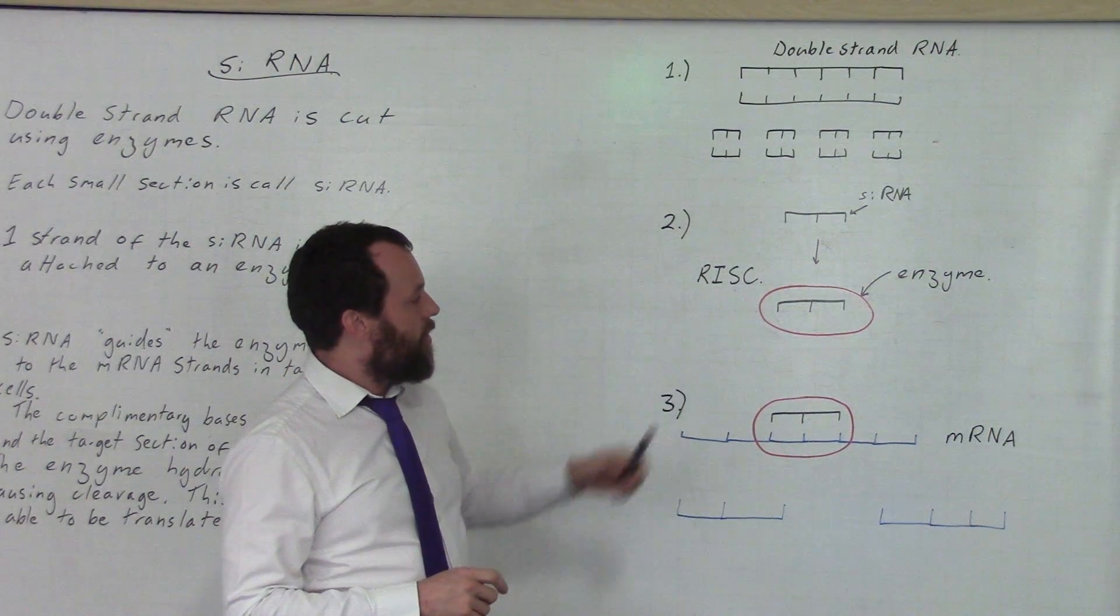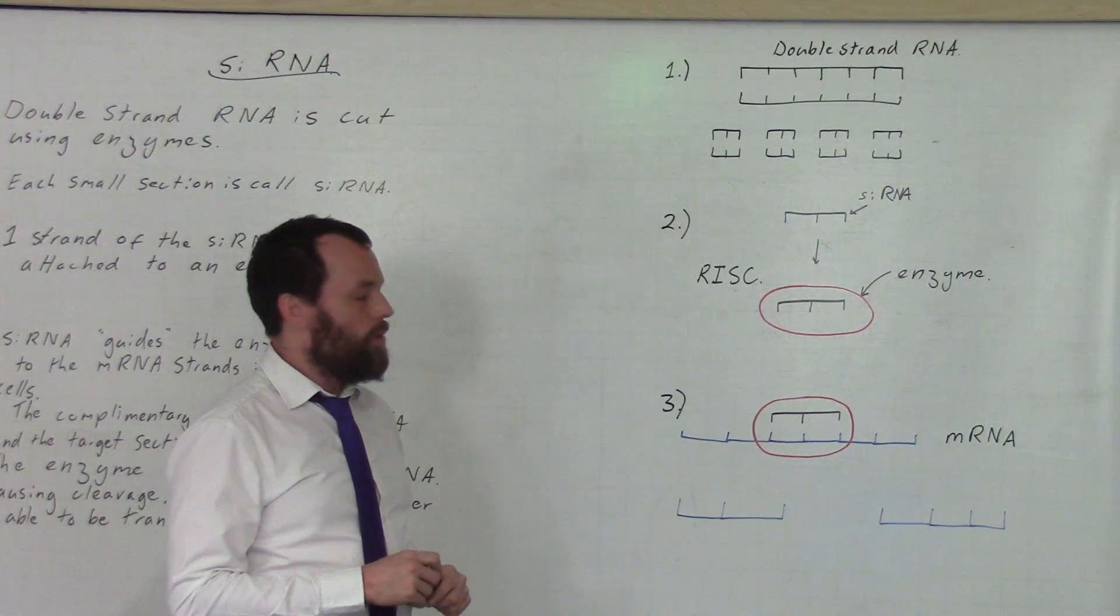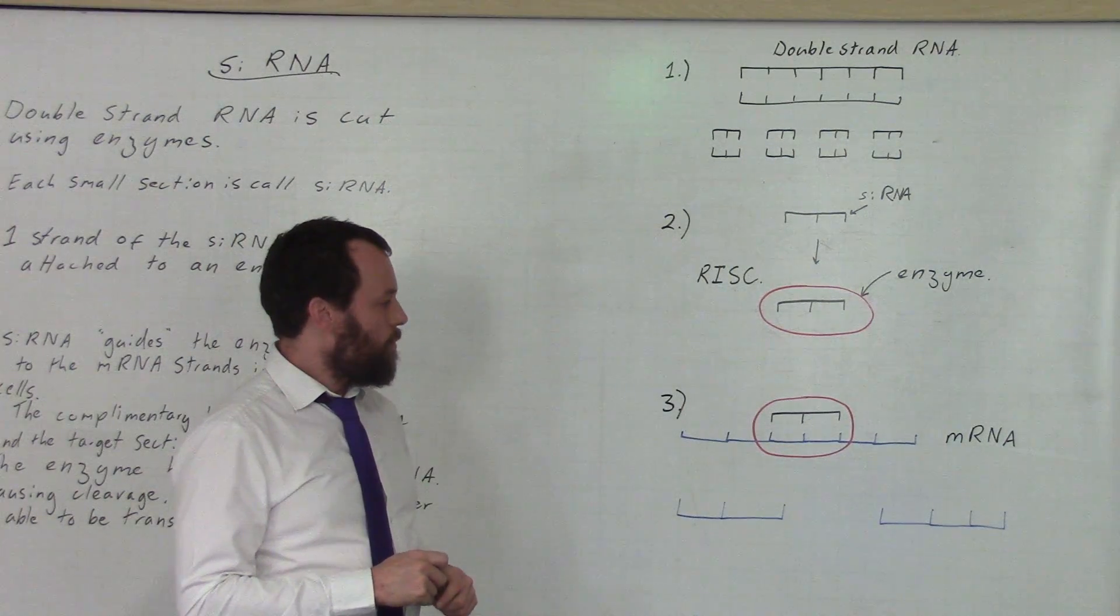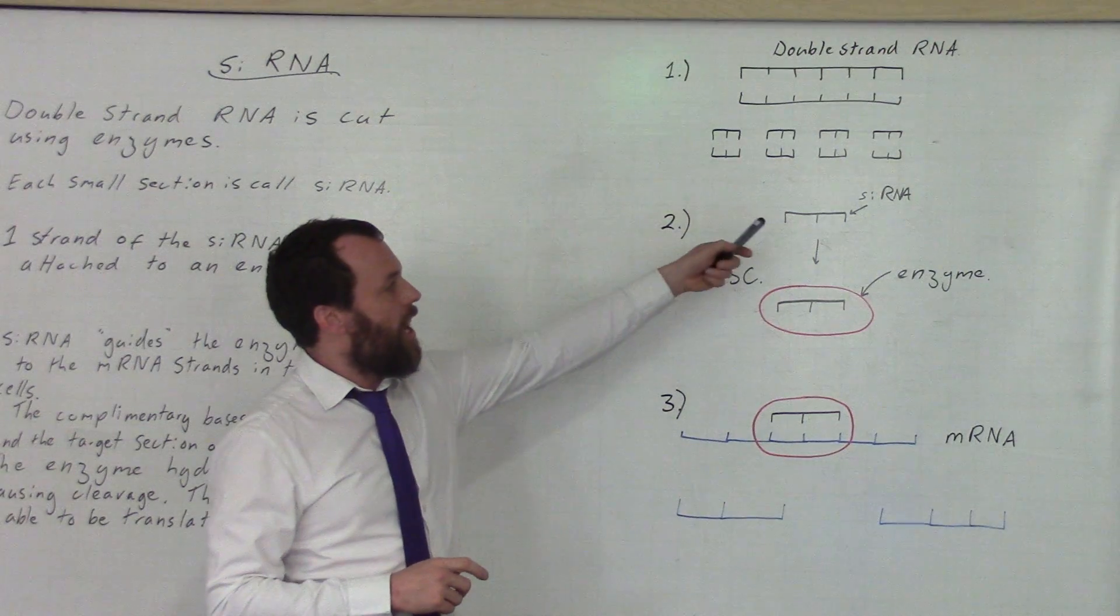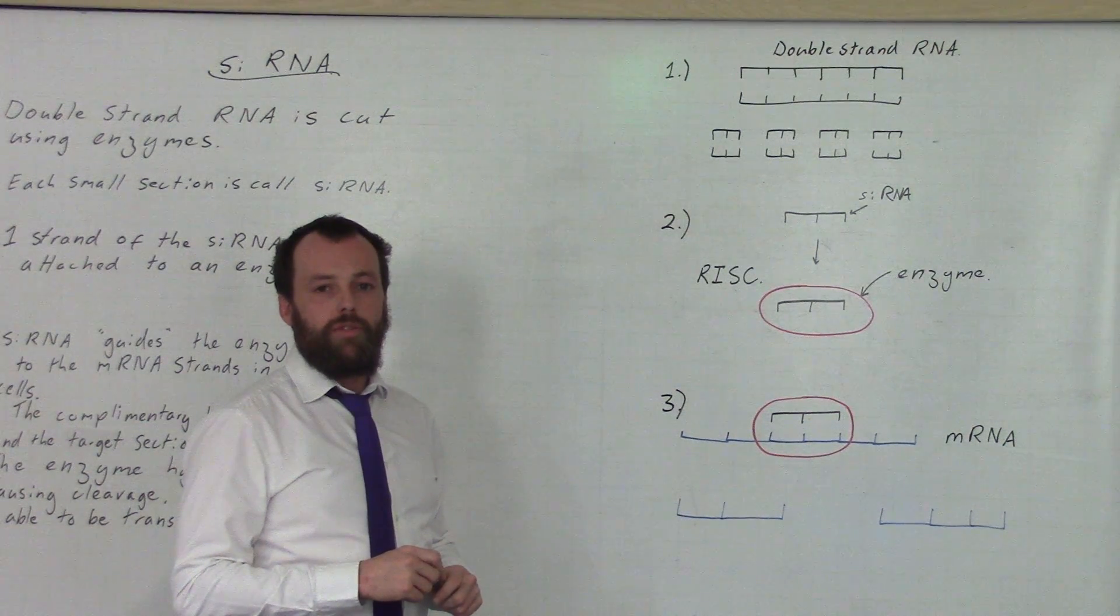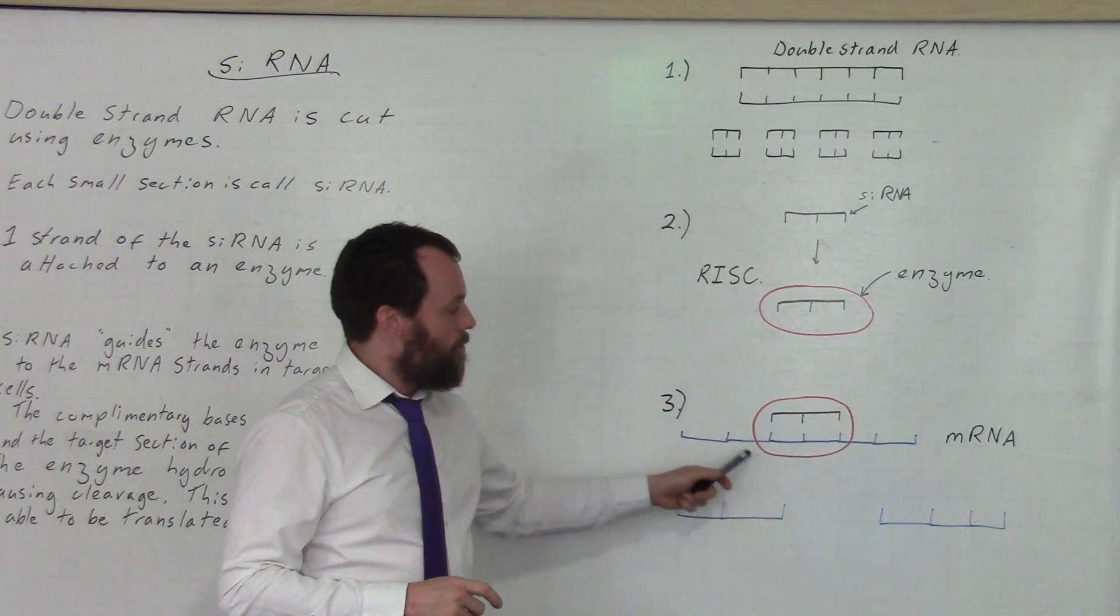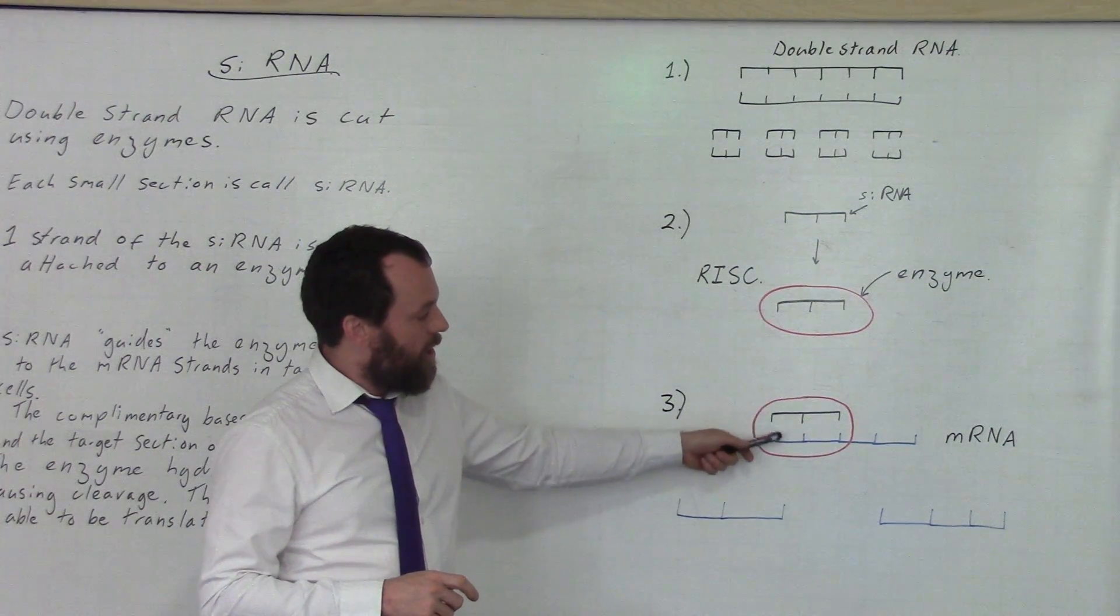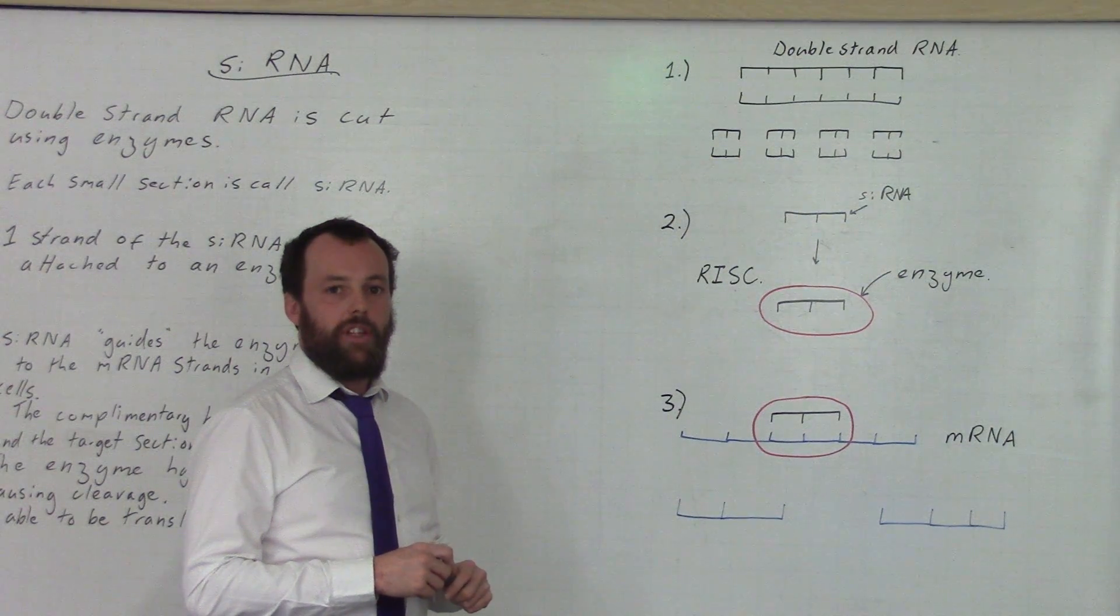This RISC complex is then, in step 3, delivered to a section of the mRNA in the target cell. Due to the complementary nature of the base pairs in the siRNA and the mRNA, they join together to form bonds. Once they've joined together, this allows the enzyme to hydrolyze, digest or break down this particular section of the mRNA. As you can see here, this is known as cleavage.